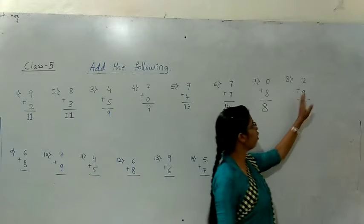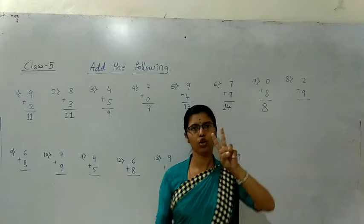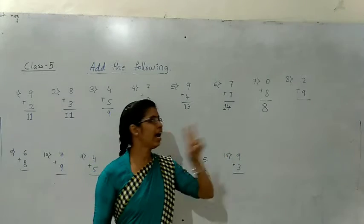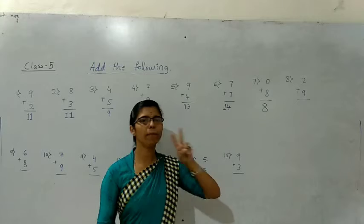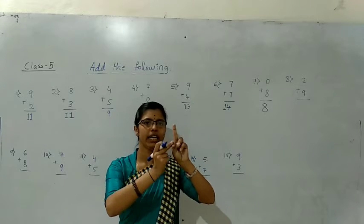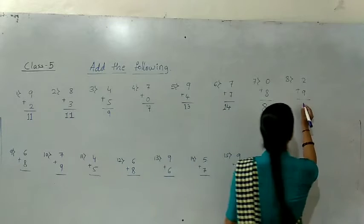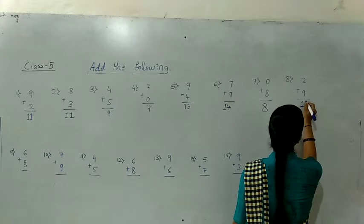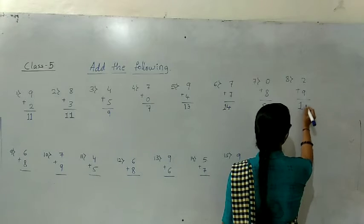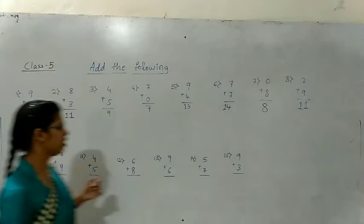Next — 2 plus 9. The upper number is 2 and the below number is 9. Count after 9: ten, eleven. The answer is 11.